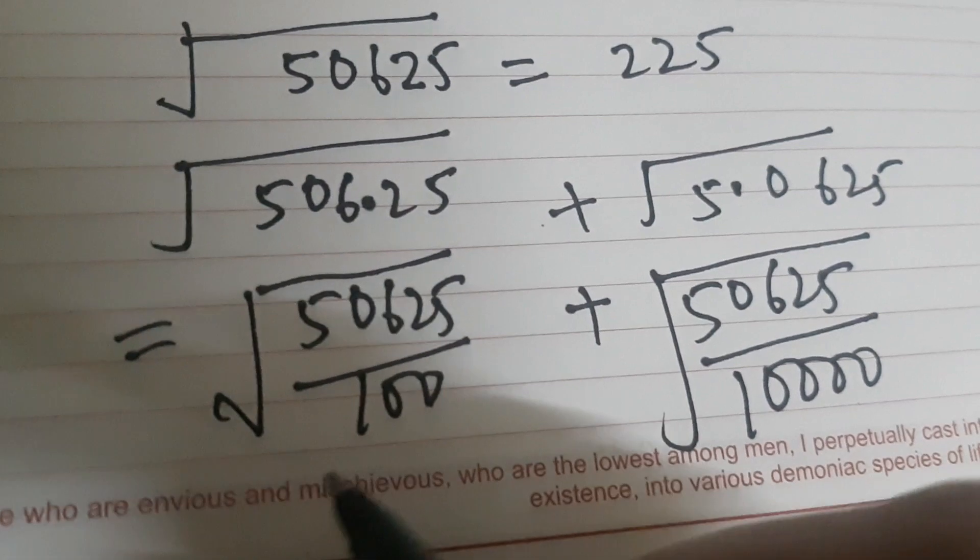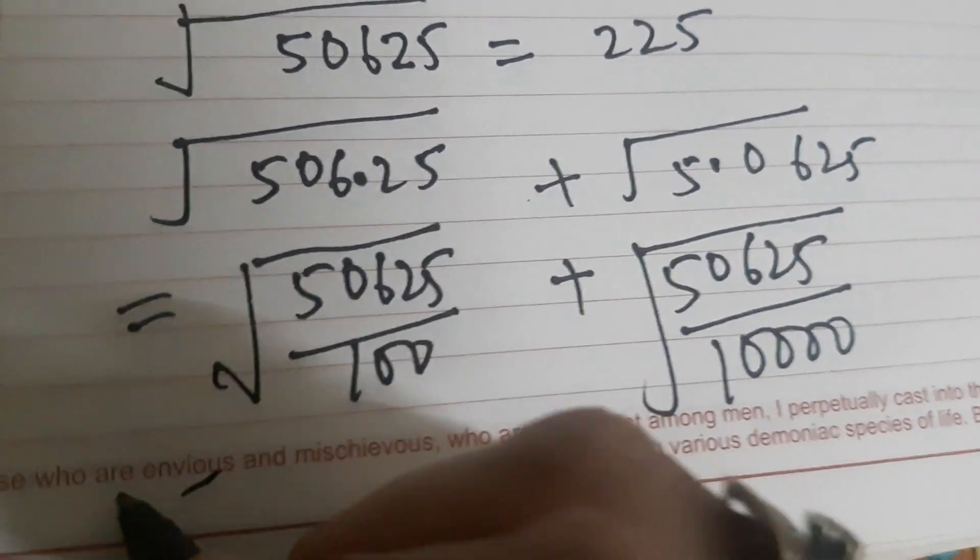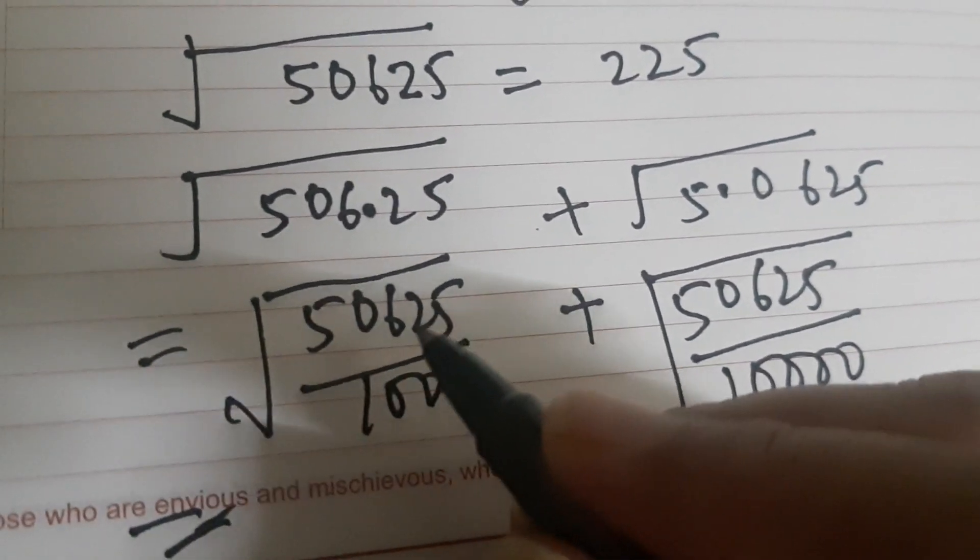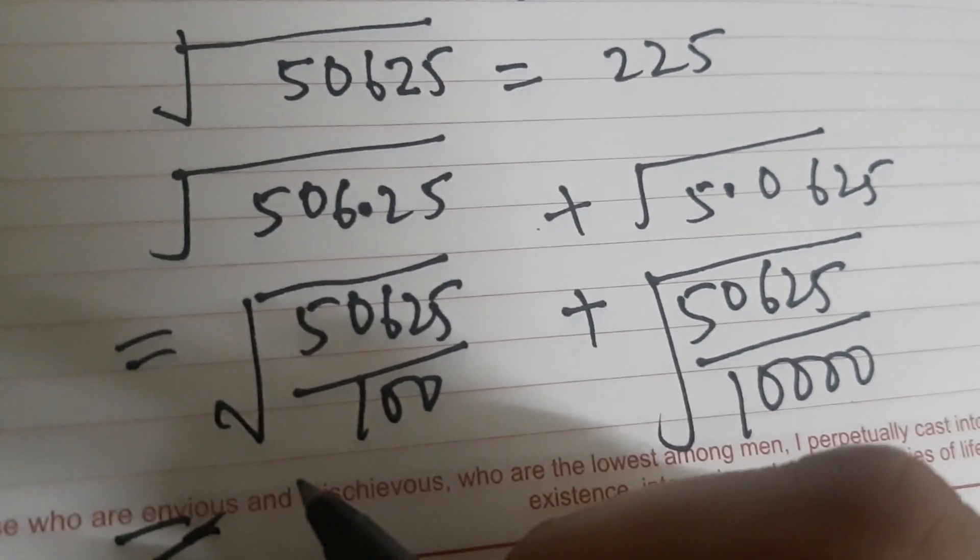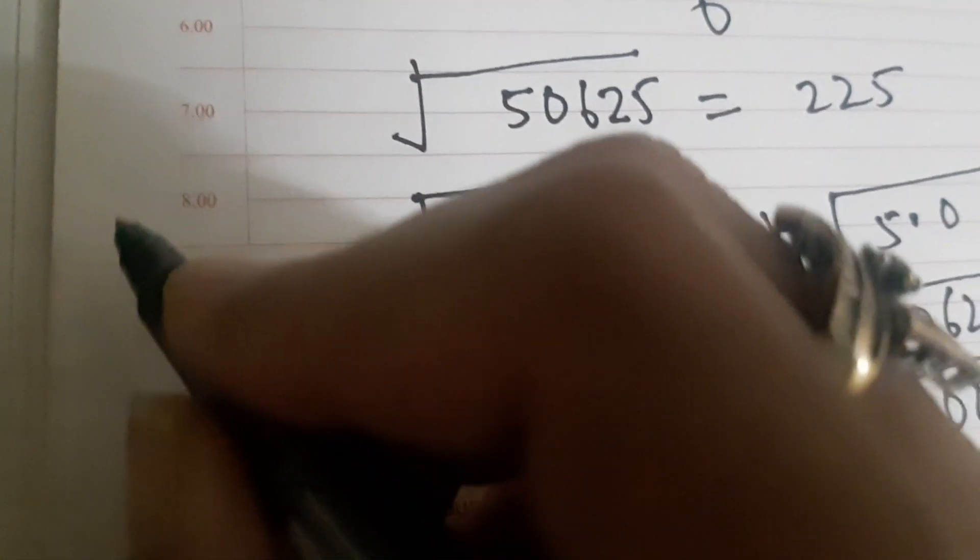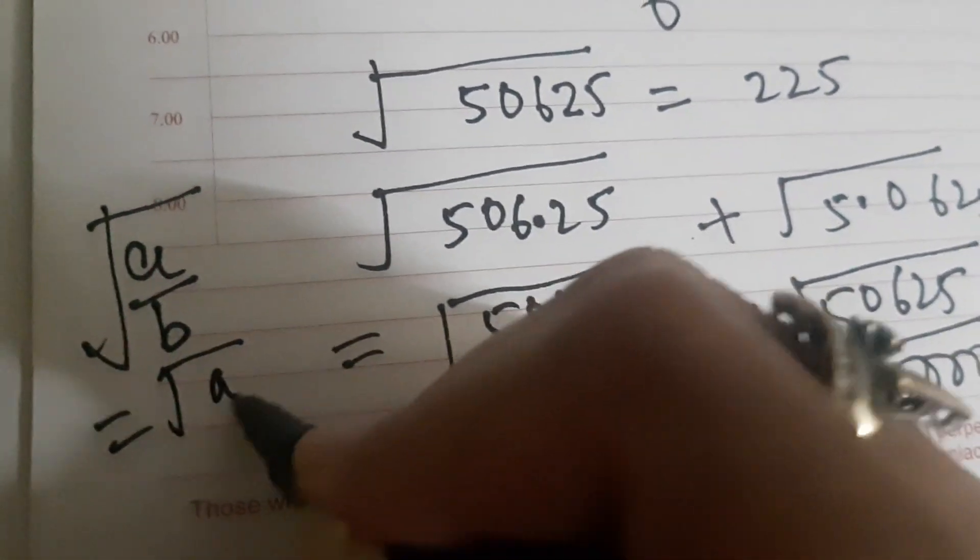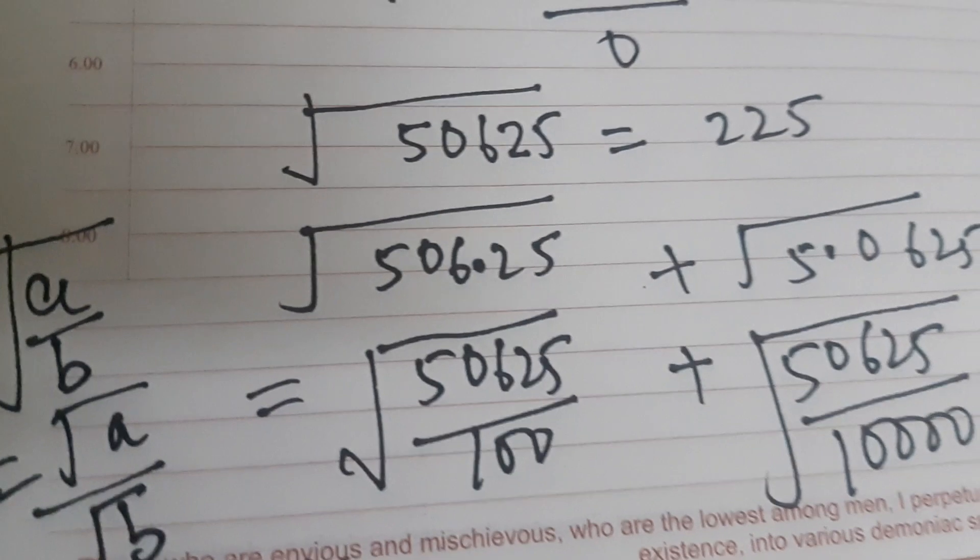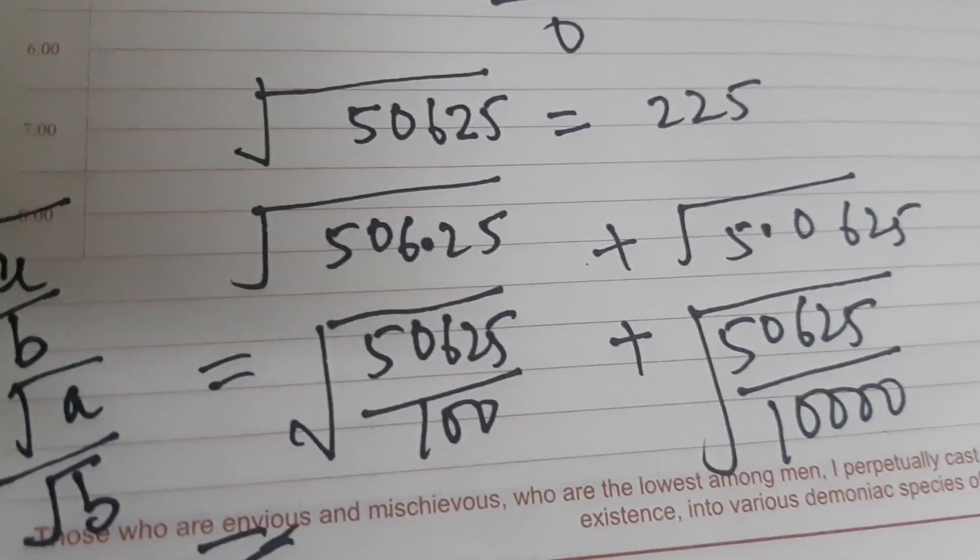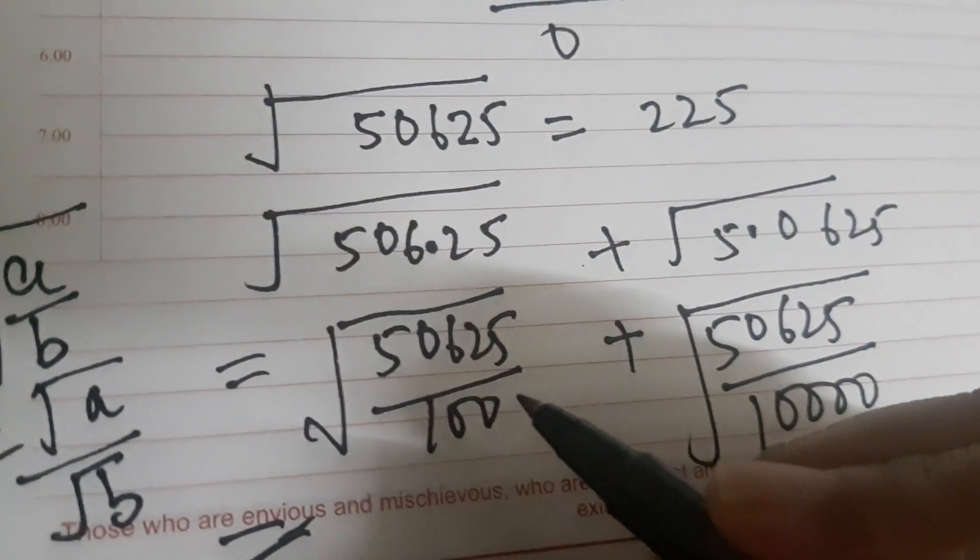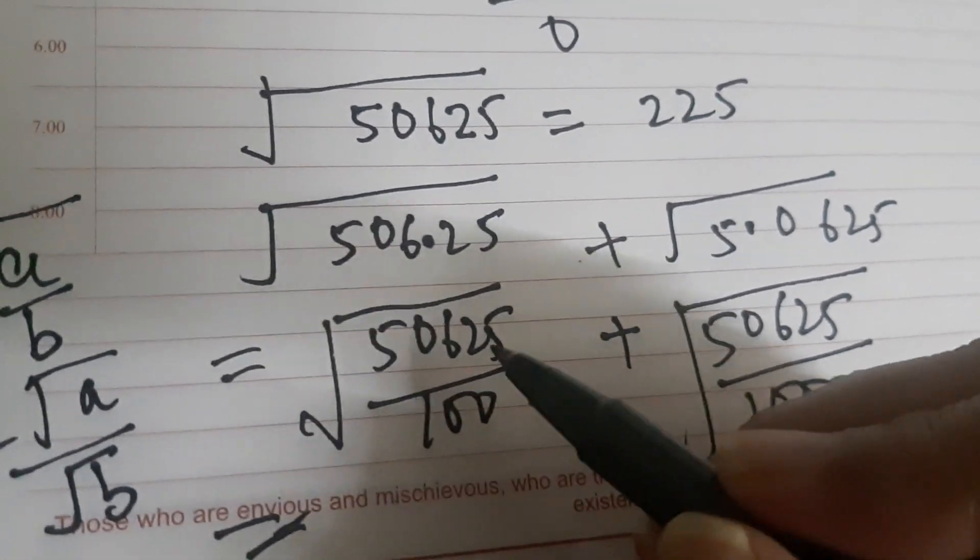So this is equal to, now what is square root of 50625? You know this identity: under root of a upon b is under root of a upon under root of b, provided b is not equal to 0.